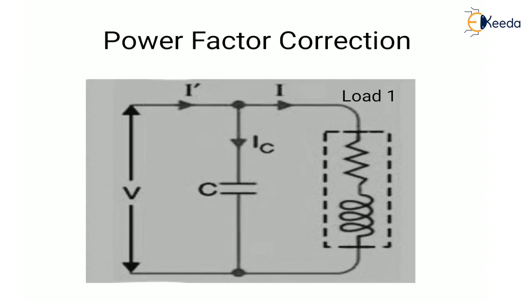Once we have the required KVAR value, we draw the power factor correction diagram. For load 1, we connect a capacitor bank across it for power factor correction, as shown in the diagram. That's all for this video — thank you.